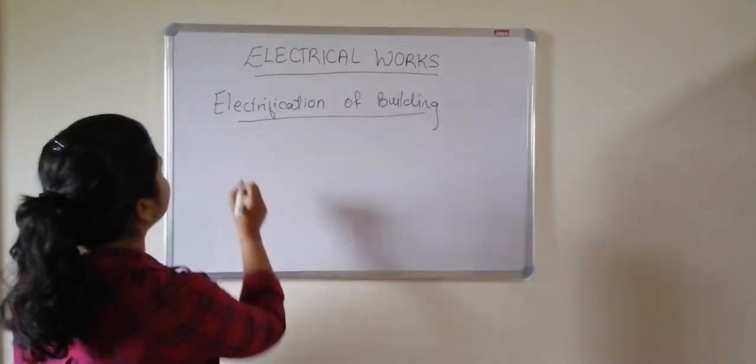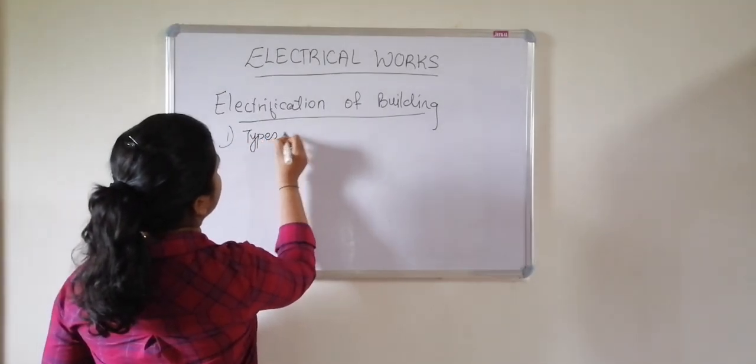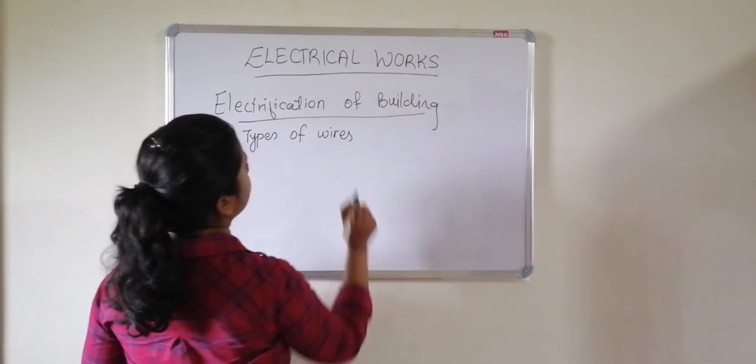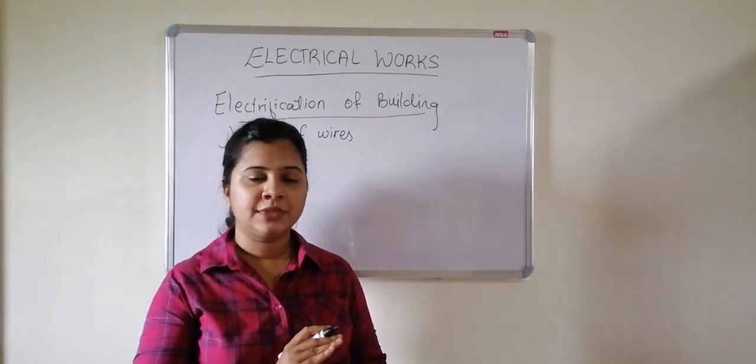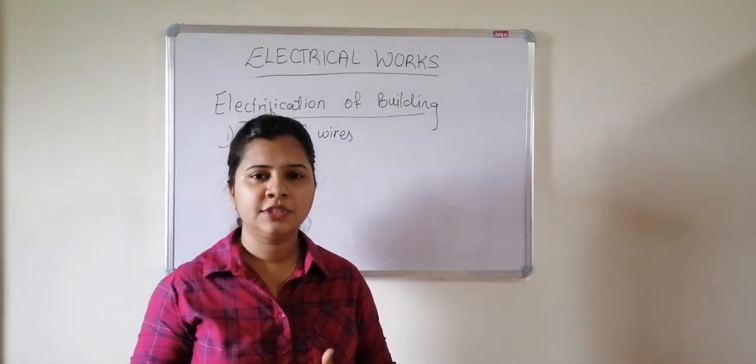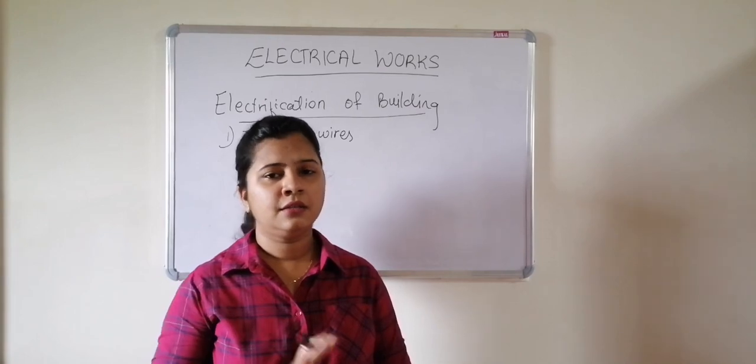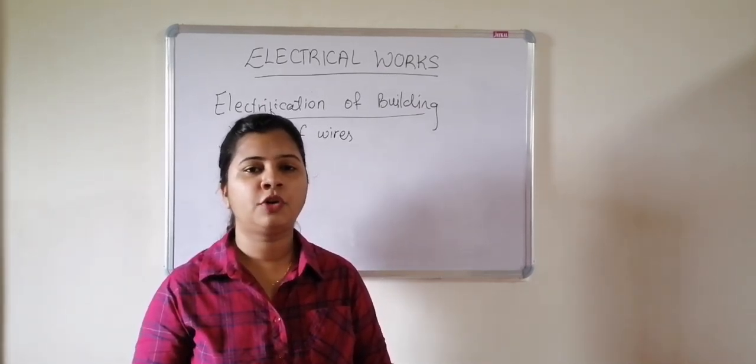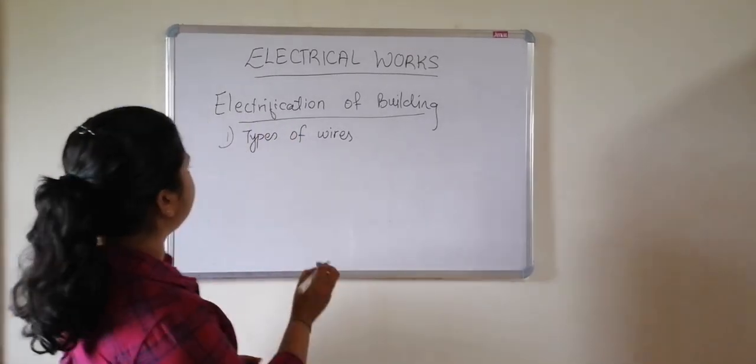The first factor is types of wire. There are various types of wires used in electrification. From the initial stage till the last stage, there are different wires like service wires, main wires, and earthing wires. Many wires are used, and you should know which wires are used for what purpose and where.